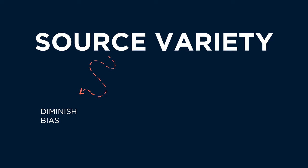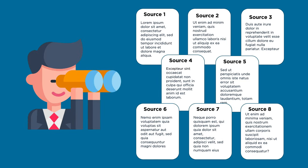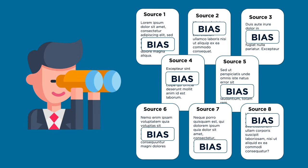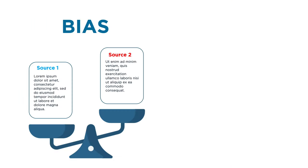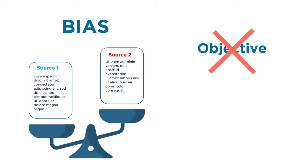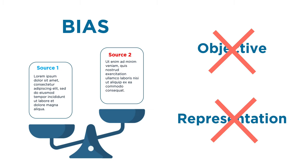Using a variety of sources also helps you diminish the biases inherently present in sources and encourages you to pull in multiple perspectives. It's important to be aware of the biases in sources. When a source has bias, it tends to prefer one view over another. That preference may prevent objectivity and often leads to an incomplete representation of information.